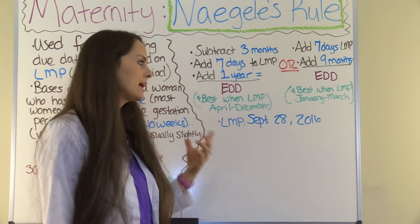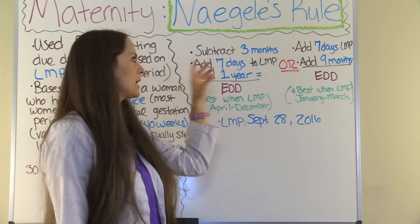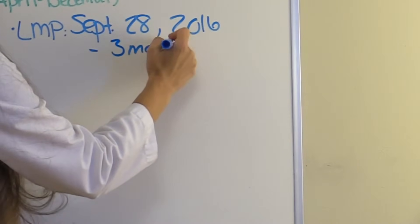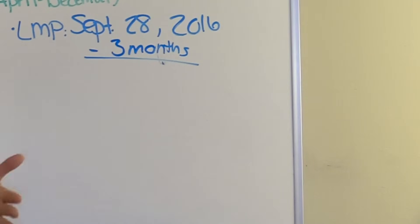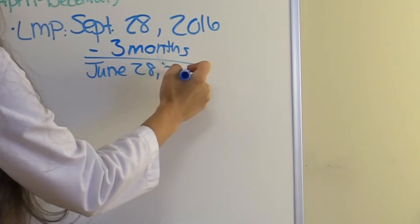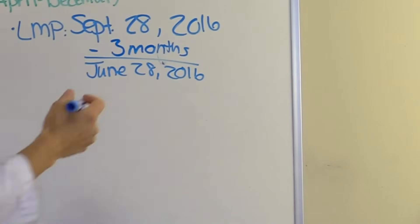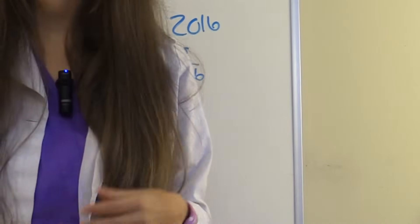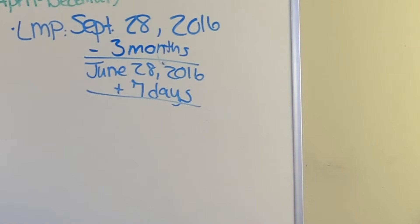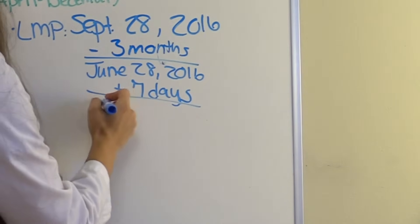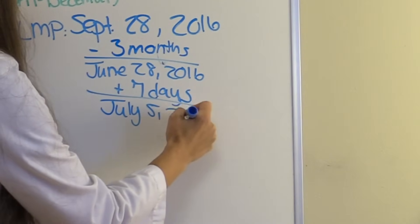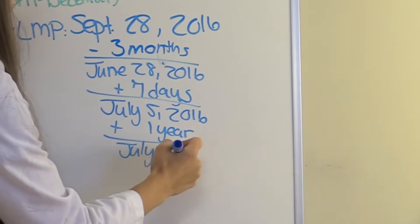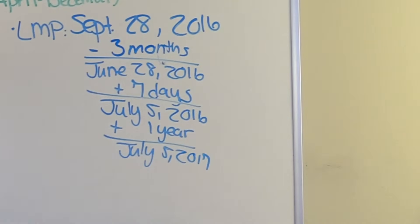Now let's look at the tricky one. The last menstrual period was September 28th, 2016 — still within April to December, so we use the first formula. Subtract three months from September: June 28th, 2016. Now add seven days. This is where the mnemonic matters — June only has 30 days, so seven days from June 28th takes us into the next month: July 5th, 2016. Add one year: July 5th, 2017. So the estimated due date is July 5th, 2017.